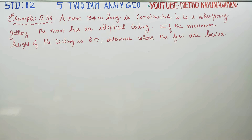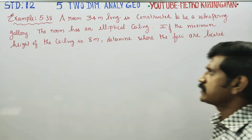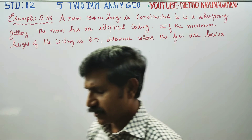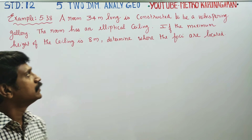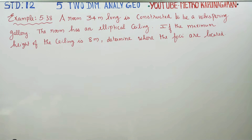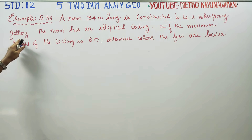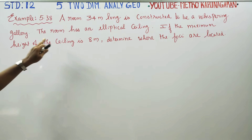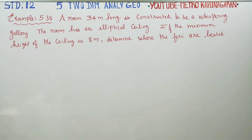Dear 12th standard students, I am Metro Karanagaran. In two-dimensional analytical geometry, example 5.38: a room 34 meters long is constructed to be a whispering gallery. The room has an elliptical ceiling.